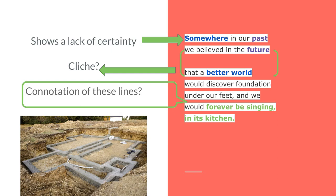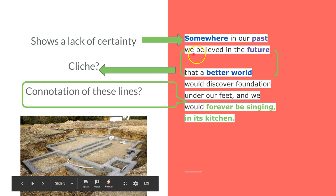The first two lines: 'Somewhere in our past we believed in the future that a better world would discover foundation and defeat and we would forever be singing in its kitchen.' You'll see on your screen that the word 'somewhere' is highlighted. Somewhere is not a very specific description—there's no specific place, and so that highlights the lack of certainty. Our speaker is speaking on behalf of the people who are in the situation where they were promised housing and are waiting.